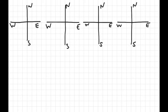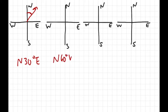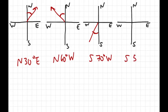In navigation, a direction is often given as a bearing — an acute angle measured from due north or due south. A bearing of north 30 degrees east starts at north and is 30 degrees toward east. North 60 degrees west is 60 degrees from north toward west. South 70 degrees west is 70 degrees from south toward west, and south 50 degrees east is 50 degrees from south toward east.